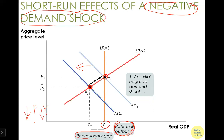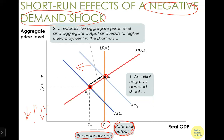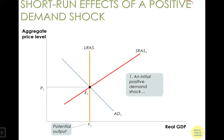This gap between actual and potential output is called a recessionary gap. Because of this recessionary gap, in the short run we will see high unemployment due to this negative demand shock.